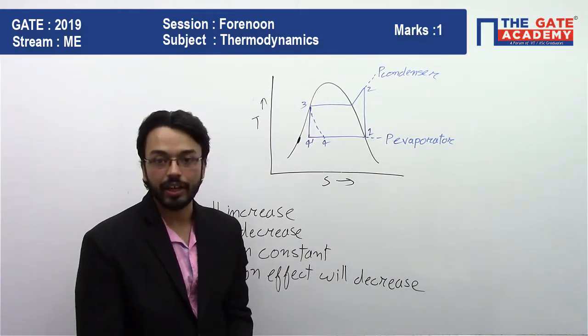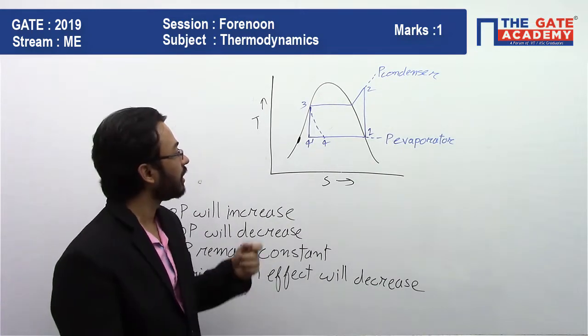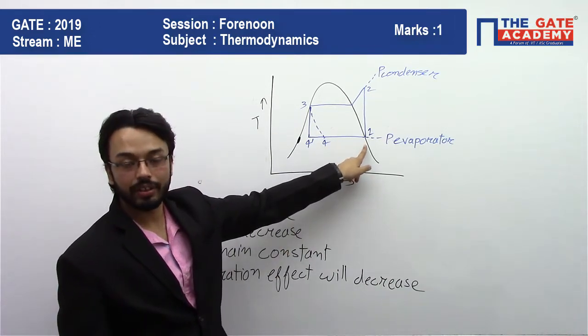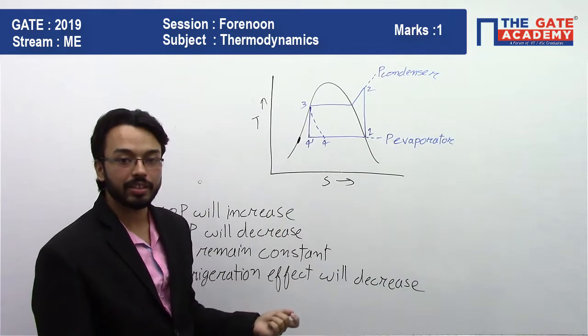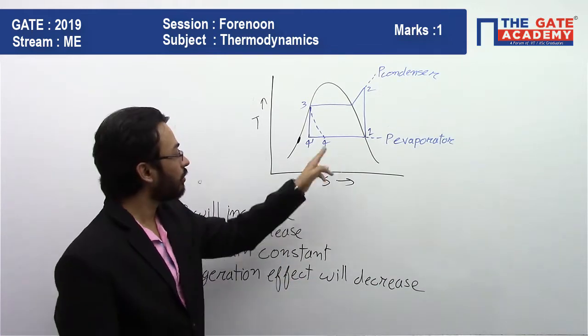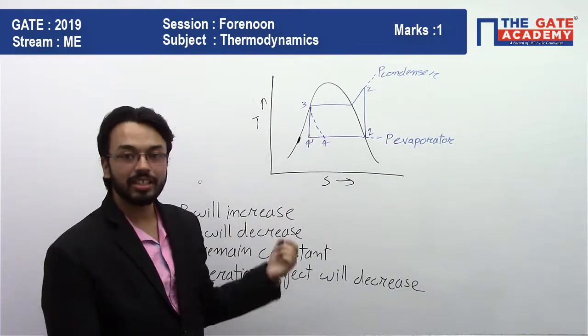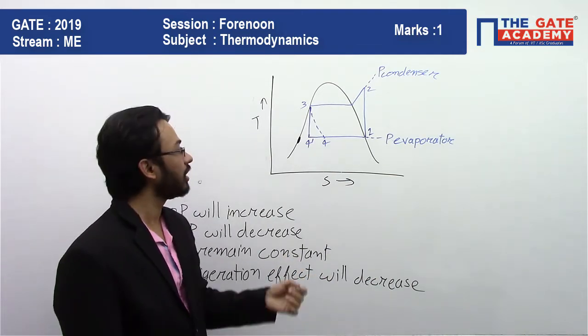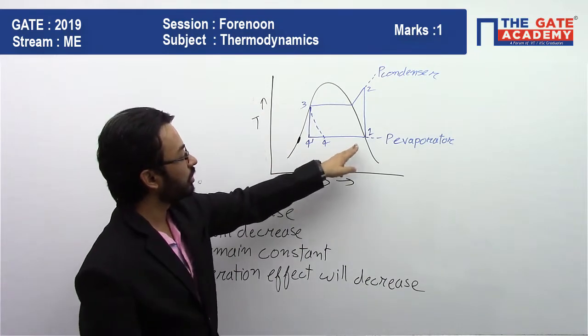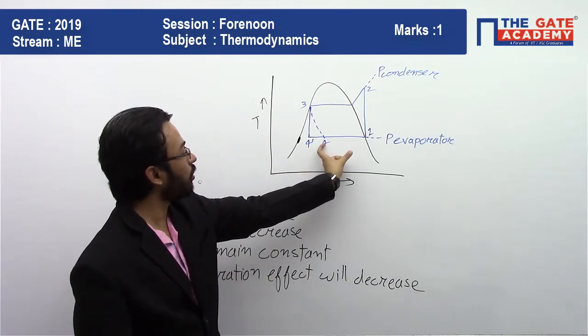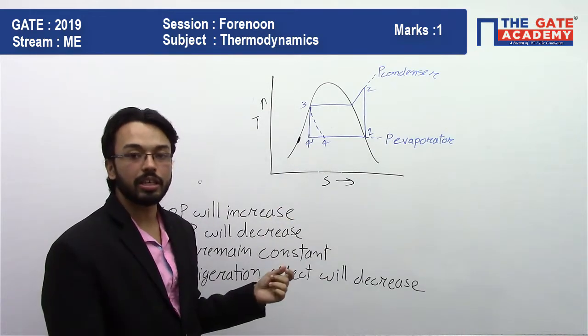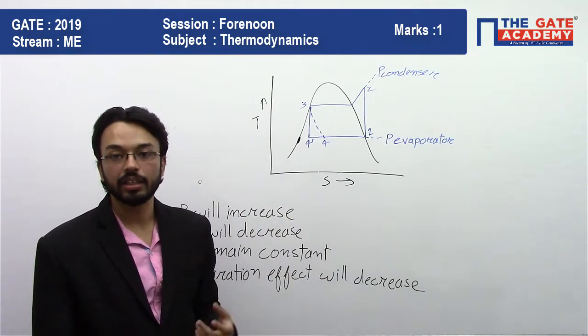But the refrigeration effect in the previous case was 4 to 1. The refrigeration effect in case of throttling was 4 to 1. But in this case, if we do it by reversible adiabatic expansion instead of throttling, it becomes 4 dash to 1. So definitely you can see that the refrigeration effect is increasing.